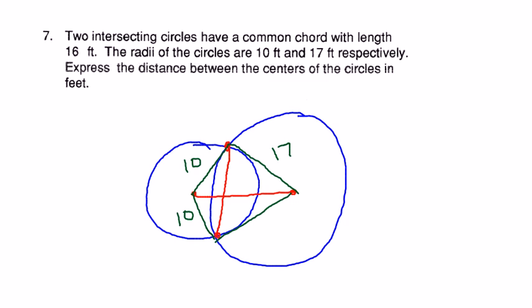Now, when you connect up the two radii, it has to turn out to be at a right angle with that common chord. And so if it's at a right angle with that common chord, what we know about circles is if a radius or a diameter, so any line that goes through the center intersects a chord at a right angle, it's also a bisector. So that means we know this length here is 8, and this length here is 8. It says express the distance between the centers of the circle.